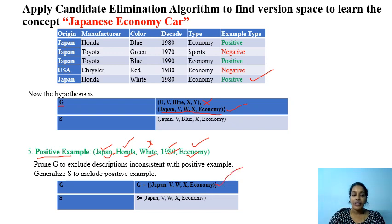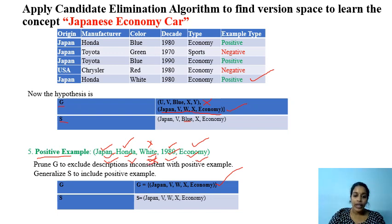Now we try with the specialized hypothesis S. Japan and Japan are getting accepted. V and Honda are getting accepted. Blue and White are getting rejected — meaning both Blue and White are valid positives. So we generalize Blue to W. The current hypothesis we got are these two, with G and S now matching.